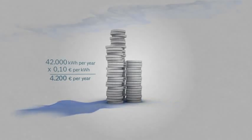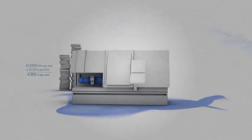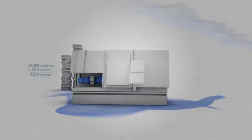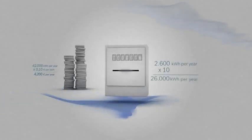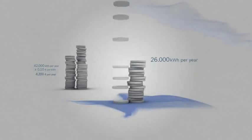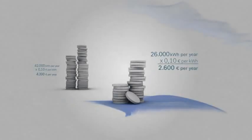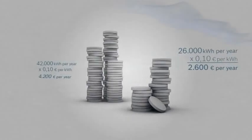Now imagine that your lathes have been enhanced and are now equipped with our variable speed pump drives. One machine would then require only 2,600 kilowatt hours per year. For 10 machines, this amounts to 26,000 kilowatt hours and the significantly lower cost per year of 2,600 euros.